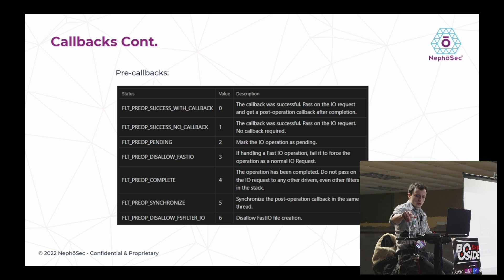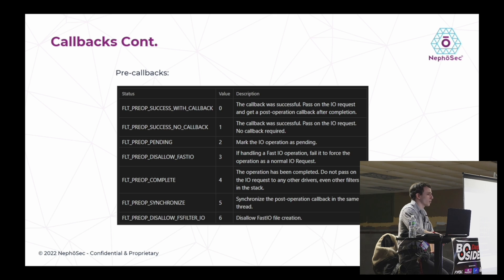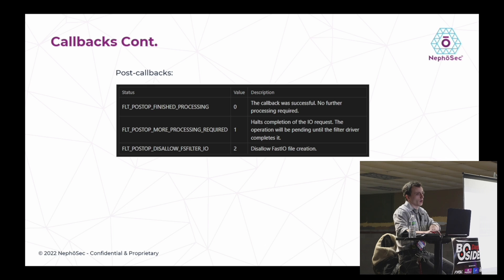So callbacks are called — great. How does filter manager know the status or return result? We have standardized return codes, which is a DWORD or U32-size return value disclosing what happened during our callback routine. For example, if we want to say this callback went well and we don't need post-operation callbacks invoked, we can return a status of one, which tells the filter manager to call this function but not notify anybody else. We need to know what statuses to return to patch these callbacks out and basically skip over a target mini-filter.